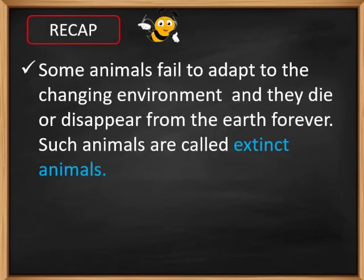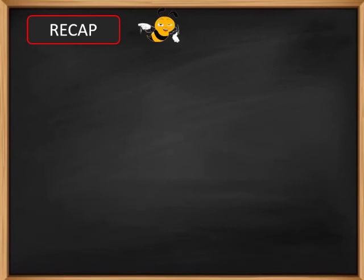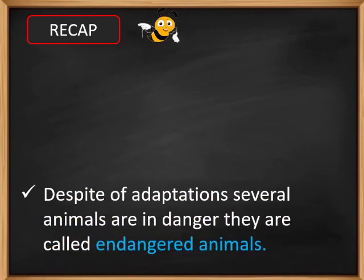Let us take a quick recap. Some animals fail to adapt to the changing environment and die or disappear from the earth forever. Such animals are called extinct animals. Examples are dinosaur and Archaeopteryx. Despite adaptations, several animals are in danger and their numbers are seriously decreasing. They are called endangered animals. An example of such an animal is the giant panda.